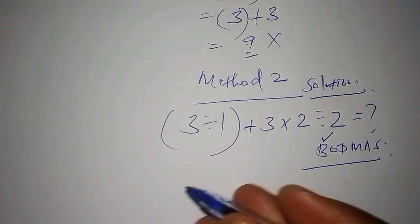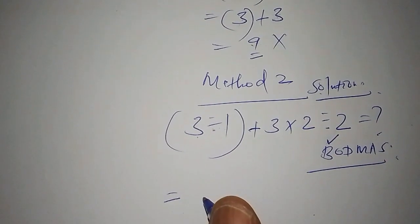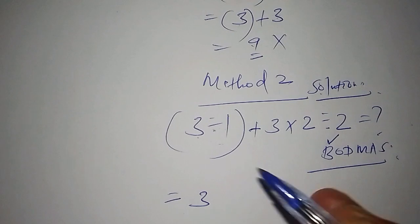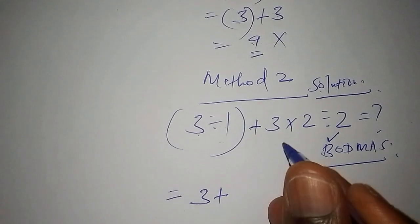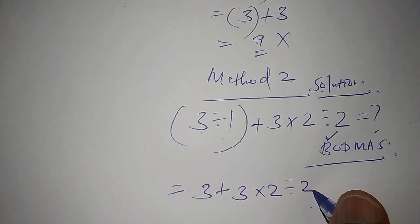This equals 3÷1 is 3, then because the bracket starts, add to this 3×2 then divide by 2.